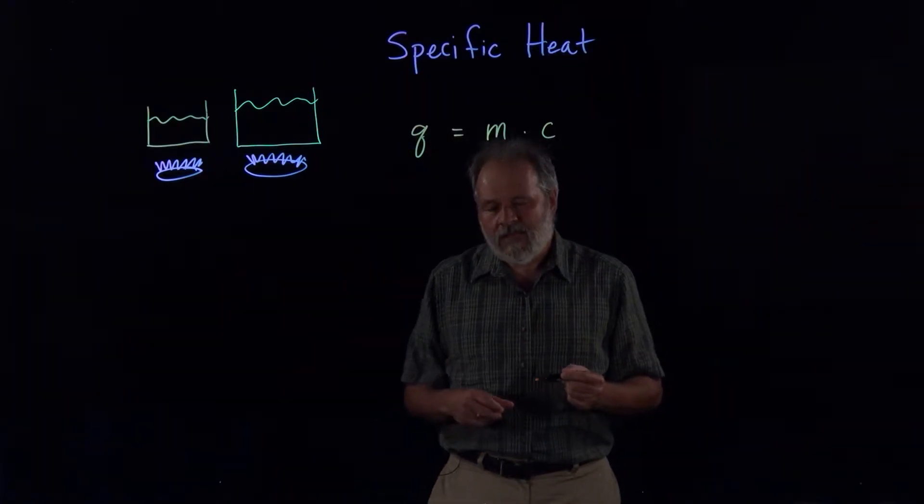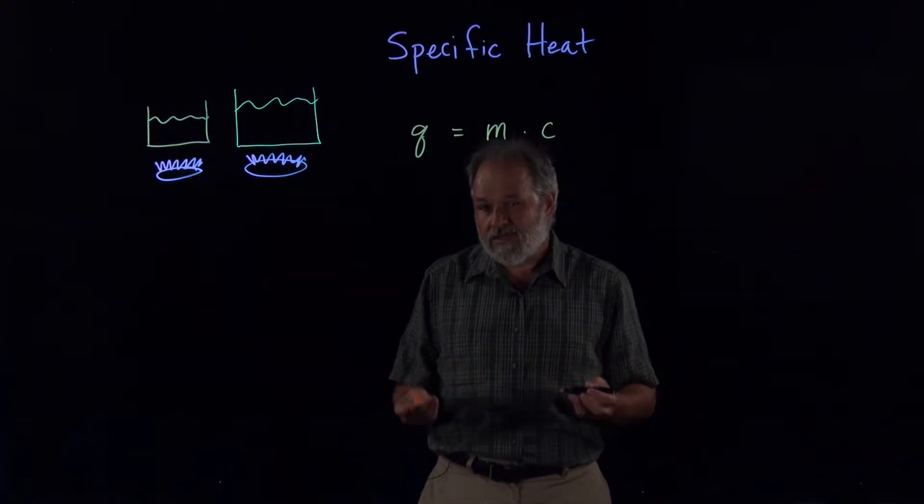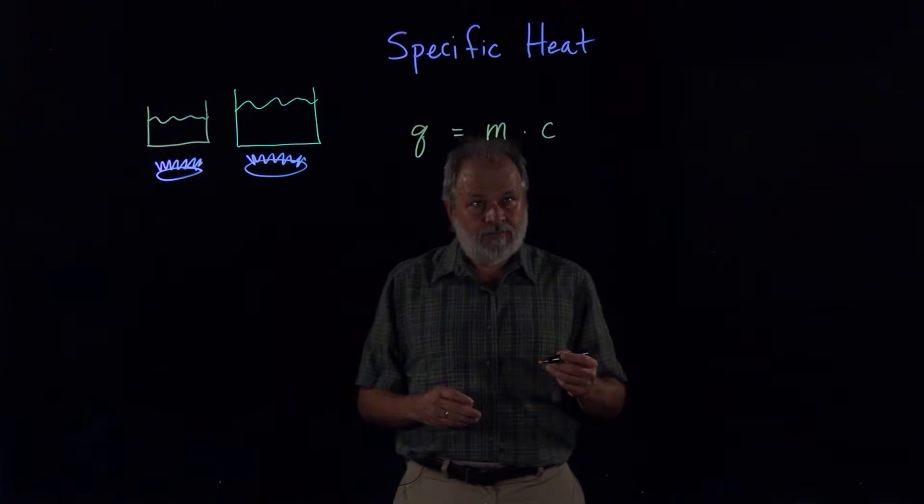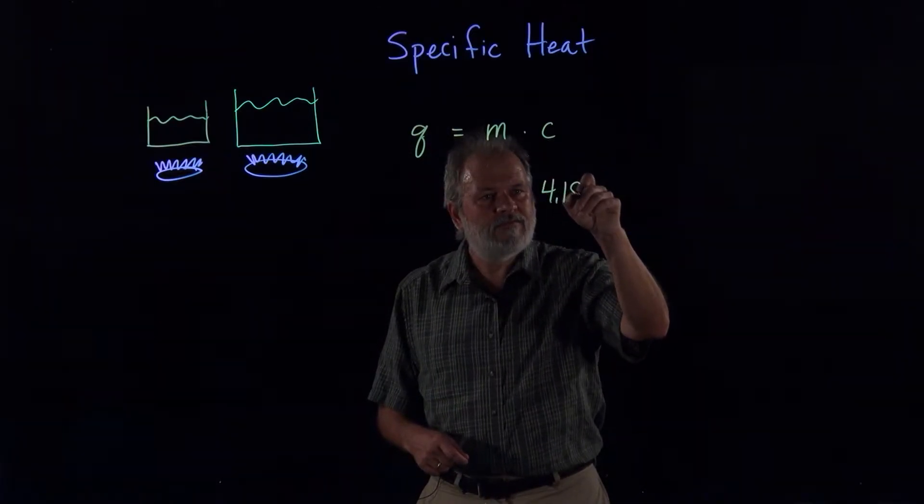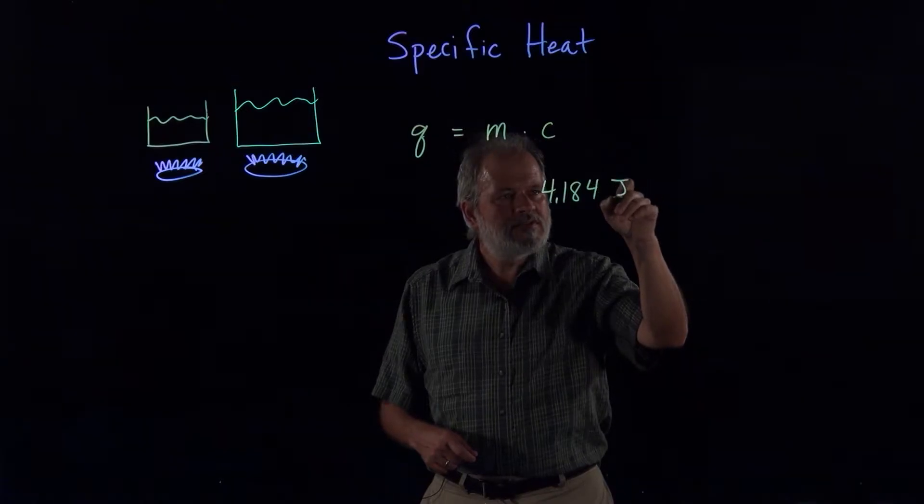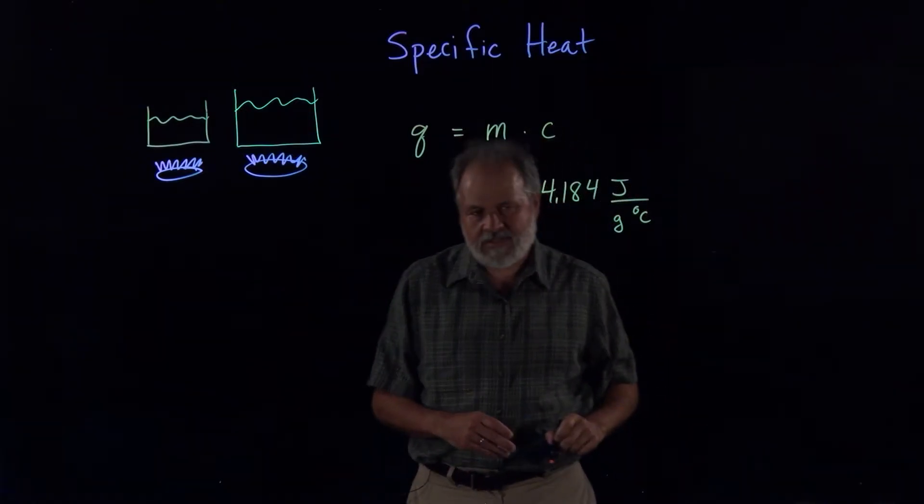One of them that might be real handy is the one for water, since that's pretty much mostly what we wind up heating anyway. And so for water, this constant is 4.184 joules per gram, per degree C that we wish to raise the temperature.